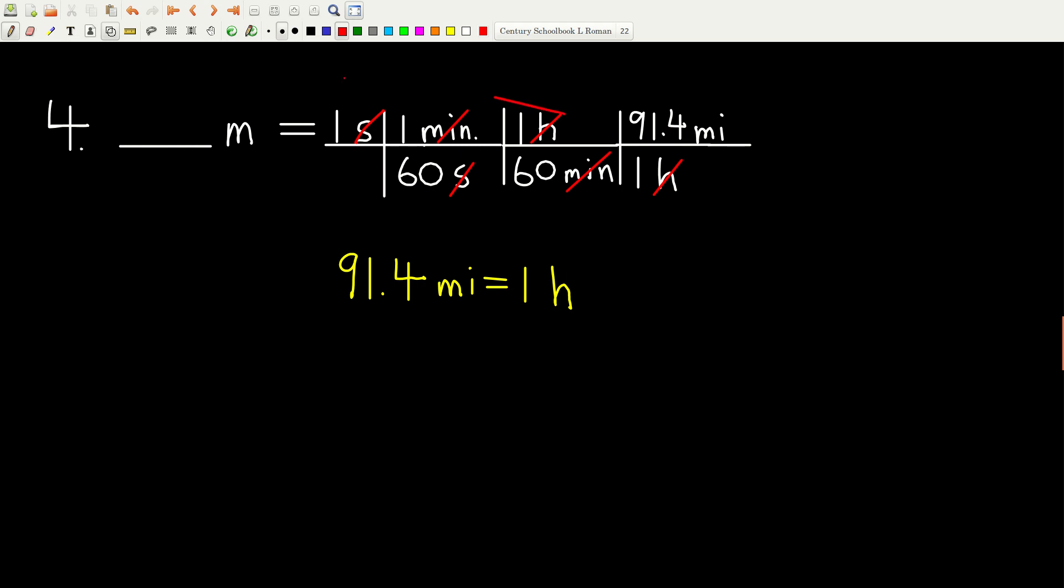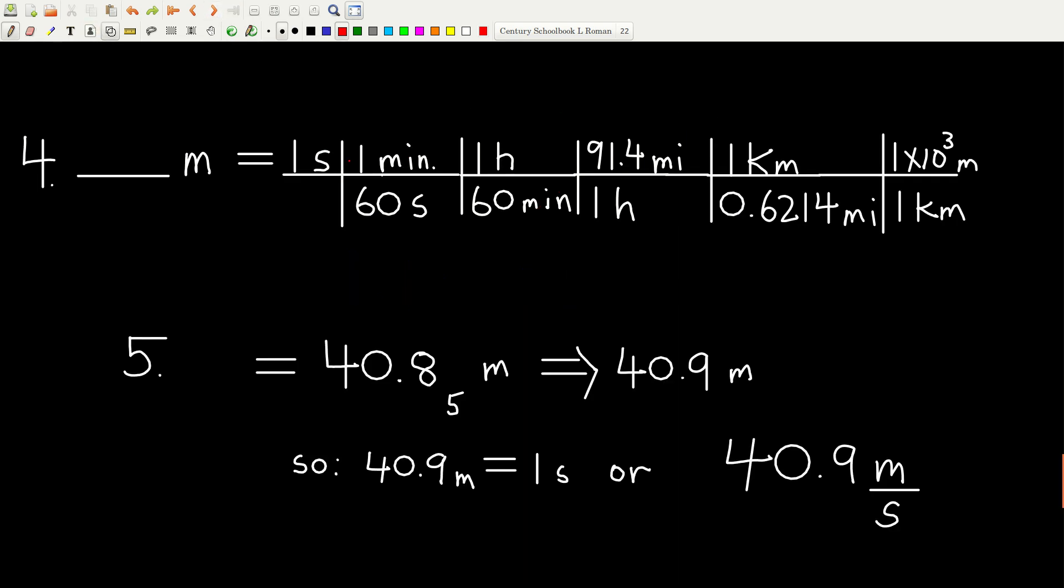And now I can just continue on doing what we have been doing in the past. So now that I have seconds canceled, minutes canceled, hours canceled, now to cancel miles, I know from my table of conversion factors, which you're going to memorize and probably put on your index card, I know that one kilometer is equal to 0.6214 miles. So I put miles in the bottom so that the units cancel because I had units of miles on the top here.